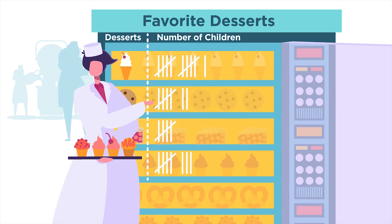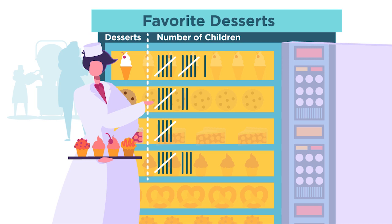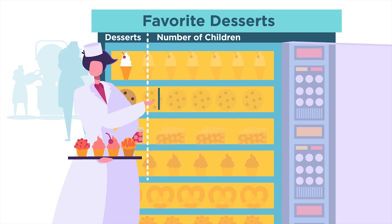Each tally equals one vote, with the fifth mark drawn as a diagonal slash. You count them: one, two, three, four, five.